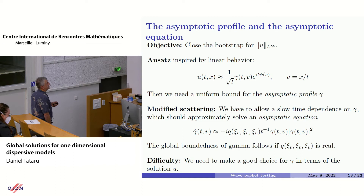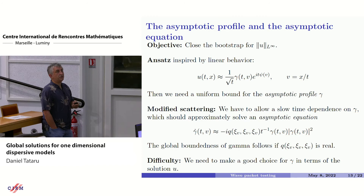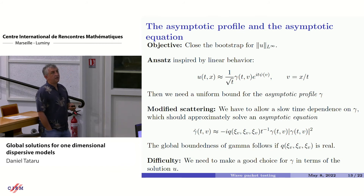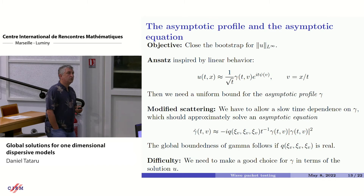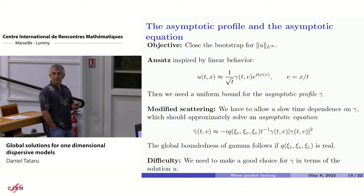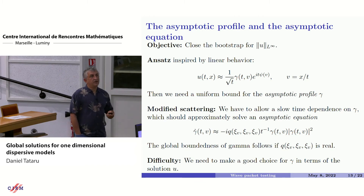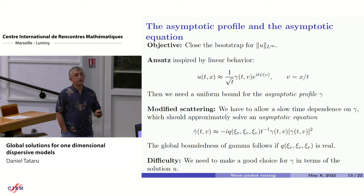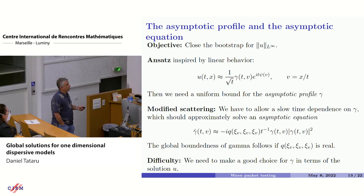The objective is to close the bootstrap assumption for the L-infinity norm of the solution. You have an ansatz inspired by the linear behavior. The difference compared to the linear case is that the asymptotic profile gamma, which in the linear case can be taken independent of time, now varies on a slow time scale — a phenomenon called modified scattering. It satisfies an asymptotic equation. The important factor is the t to the power minus one, which means gamma evolves on the log t scale. Another key factor is the coefficient q, and it's very important that q is real, guaranteeing that solutions to the resulting ODE stay bounded as time goes to infinity.